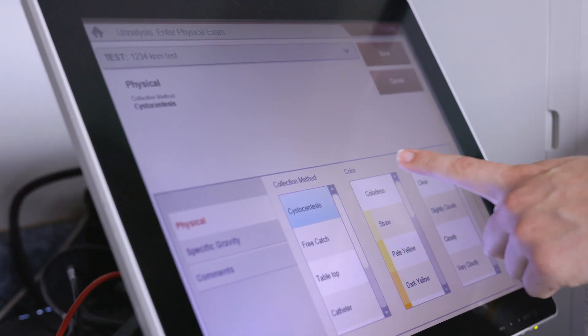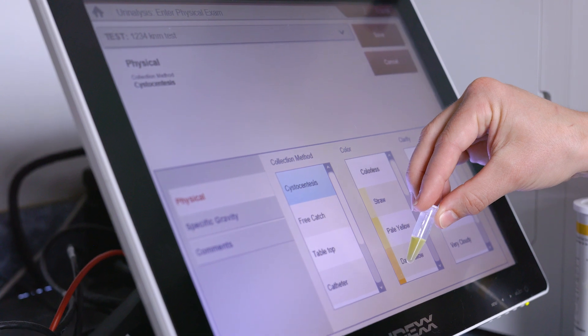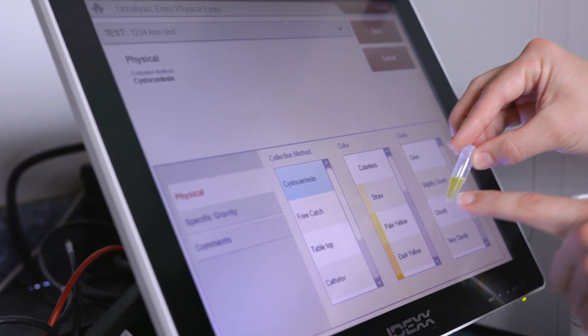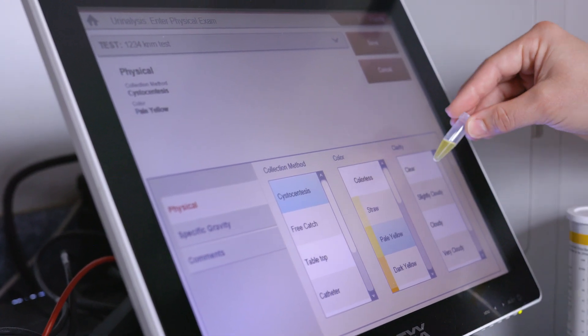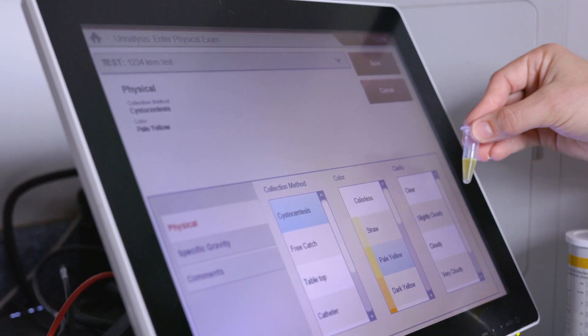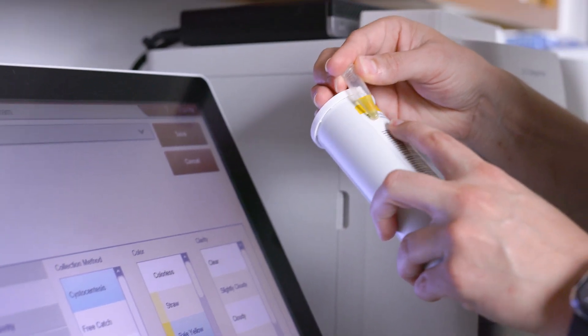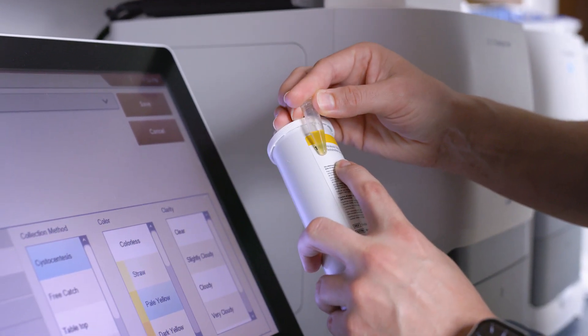And then for the color, you want to use kind of your urine sample held up to compare. And this one I believe is closest to the pale yellow. And then for clarity, you want to either use a background, a white background of some sort with some words so you can kind of see what you can and can't read. And for this sample, it does appear to be quite cloudy.